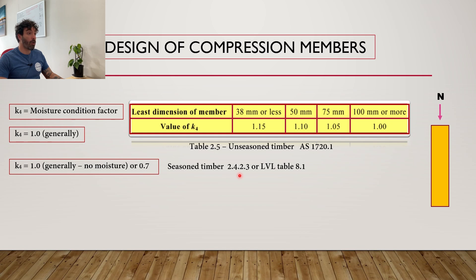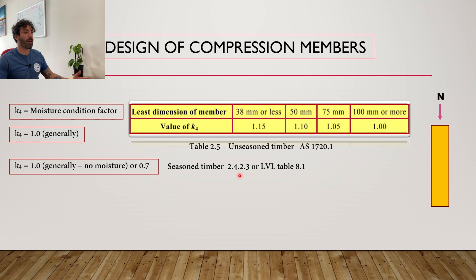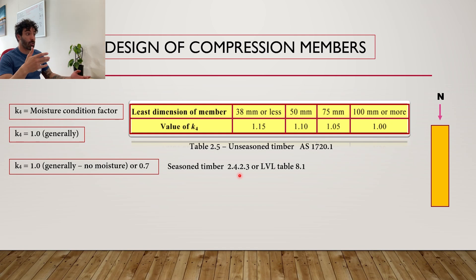If you have a timber member unprotected from rain — in a patio, or building on the coast subject to ocean spray, or exposed timber in a bathroom where steam from the shower increases moisture content — then you need to work out k4 accordingly. For our worked example, we will take k4 as 1 since we are using unseasoned hardwood.